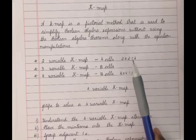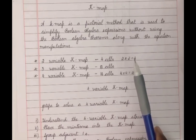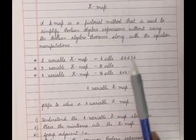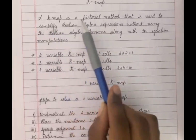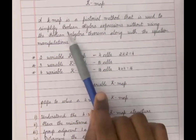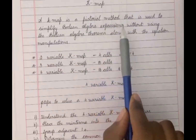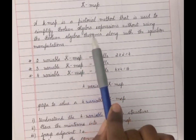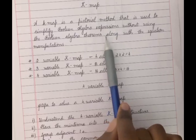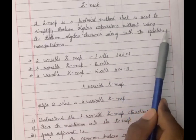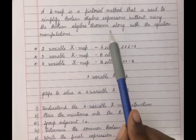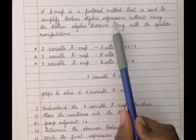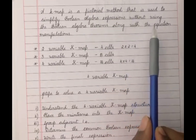Hi guys, this is Benita and welcome to my channel. Today we're going to learn about K-maps. A K-map is a pictorial method used to simplify Boolean algebra expressions without using Boolean algebra theorems or equation manipulations. It is basically used to solve Boolean algebra expressions in a pictorial form.